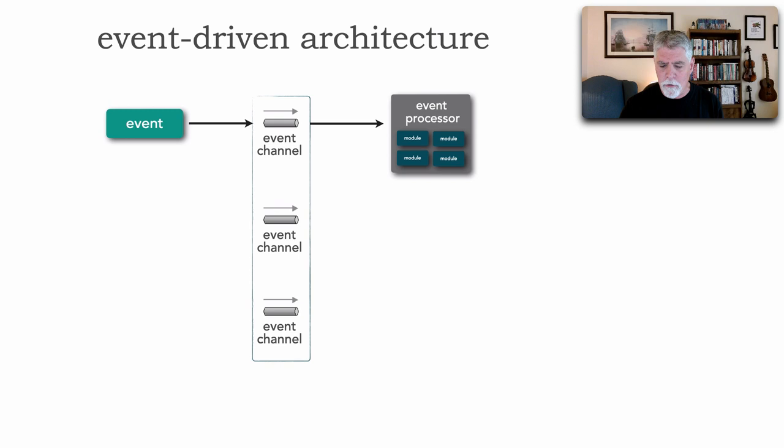Now event processors or services generate something called a derived event. Notice this is a different color. Formally you'll see that these are called process events but a derived event is what most cloud vendors have been tagging these as in the past couple of years.